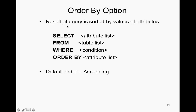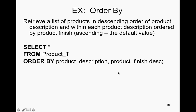The ORDER BY option sorts the result of a query by values of attributes. Your structure is: SELECT, FROM, WHERE, and ORDER BY, and it defaults to ascending order. For example: to retrieve a list of products in descending order of product description, and within each product description order by product finish ascending — you'll SELECT * FROM product table, then ORDER BY product description and product finish. This collects all the information and puts product description and product finish in ascending order.